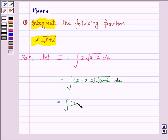This can be again written as x plus 2 into under the root x plus 2 minus 2 into under the root x plus 2 dx.